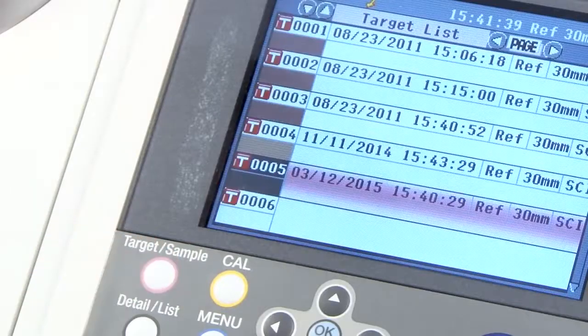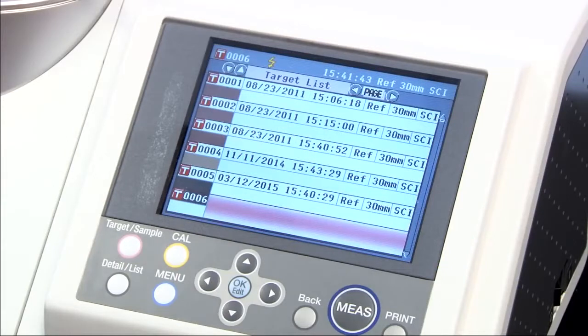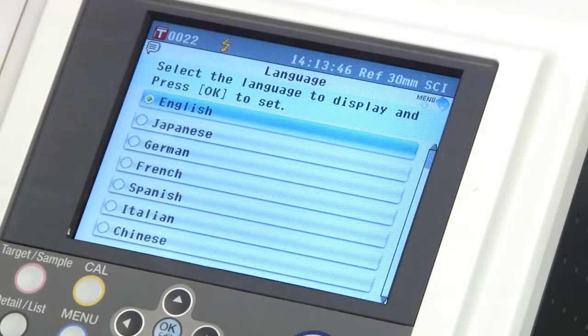In addition to the USB feature, the CM5 can store 4,000 measurements and 1,000 target colors in its large memory. You can even switch language settings.